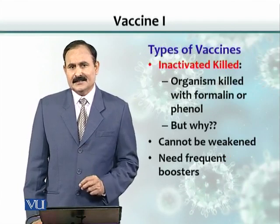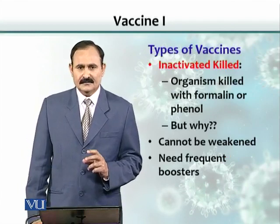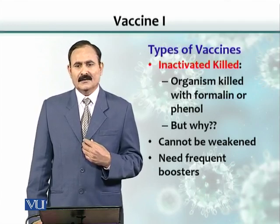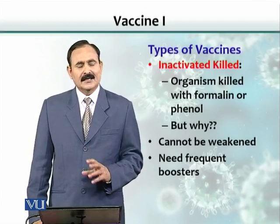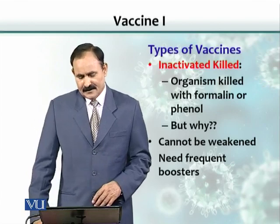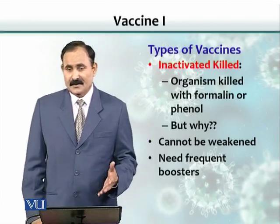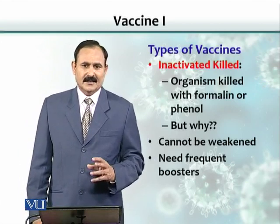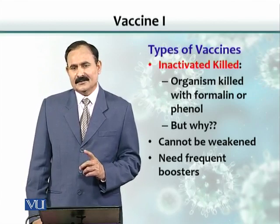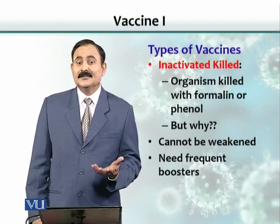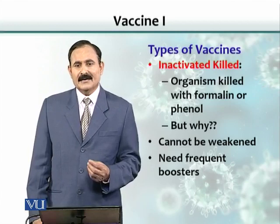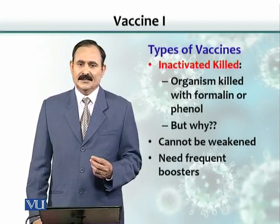For inactivated or killed vaccines, for some organisms we don't have a choice — we cannot weaken the organism. For example, with the rabies virus, although people have come up with a non-pathogenic strain, the problem is that sometimes these non-pathogenic strains revert back to pathogenicity. So the United States does not allow a live rabies vaccine in that country.